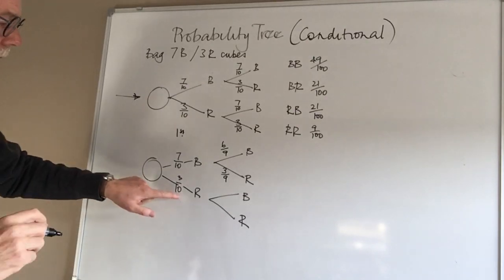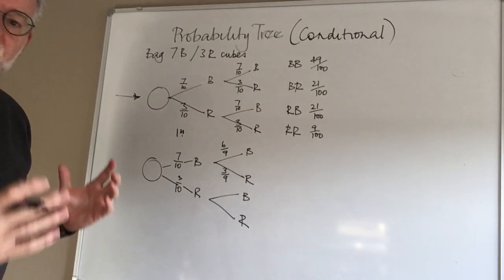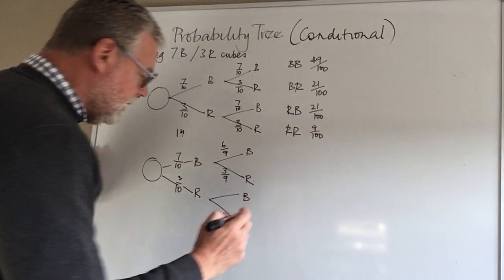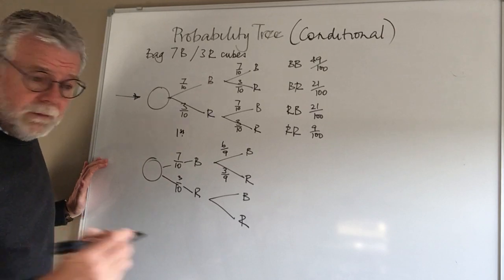Let's just say on my first event it was a red cube that I took out. Remember, I put it one side. The question is, how many cubes? Well, it's the same. I've only got nine now, haven't I, for my second event.